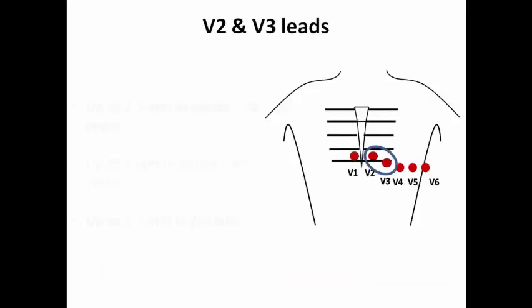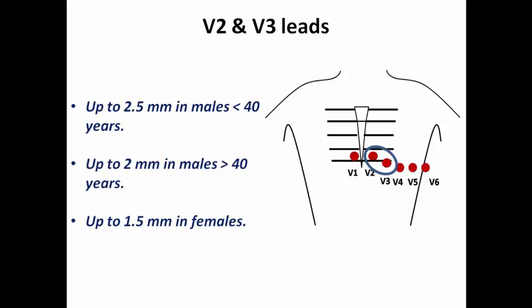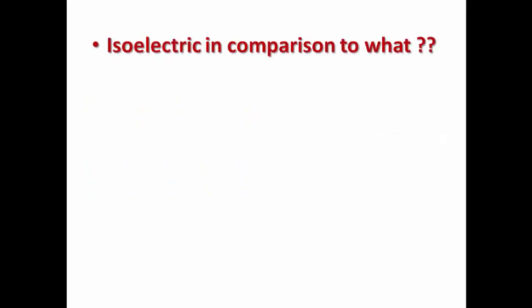V2 and V3 leads may sometimes show ST elevation, so we should know the cut point. It is up to 2.5 mm in males less than 40 years, up to 2 mm in males more than 40 years, and up to 1.5 mm in females regardless of their age.